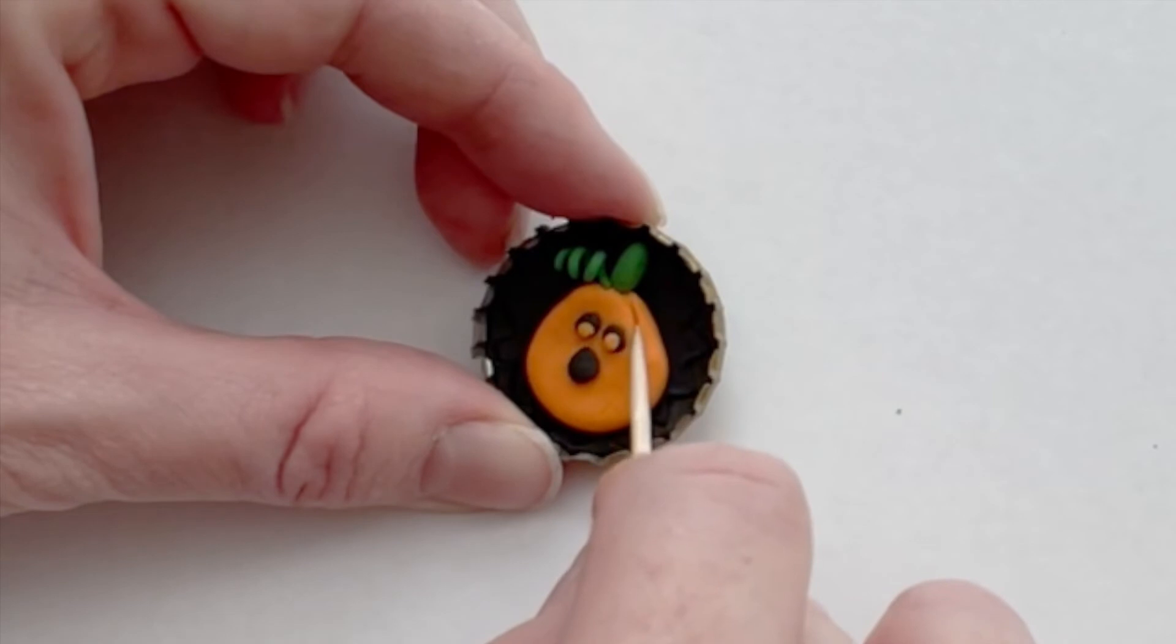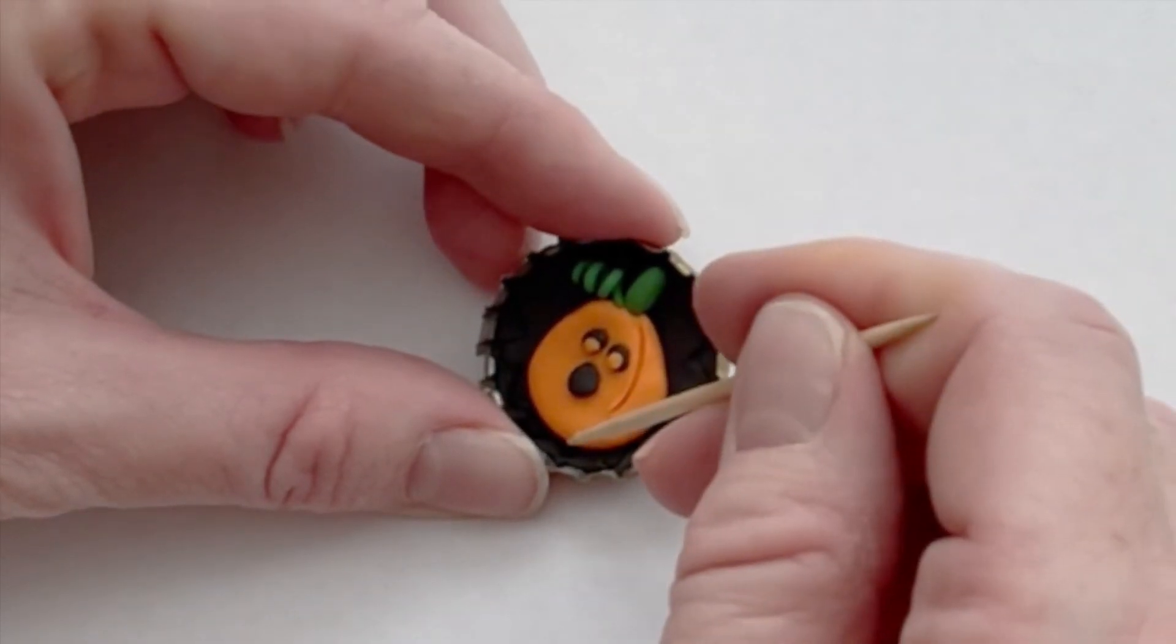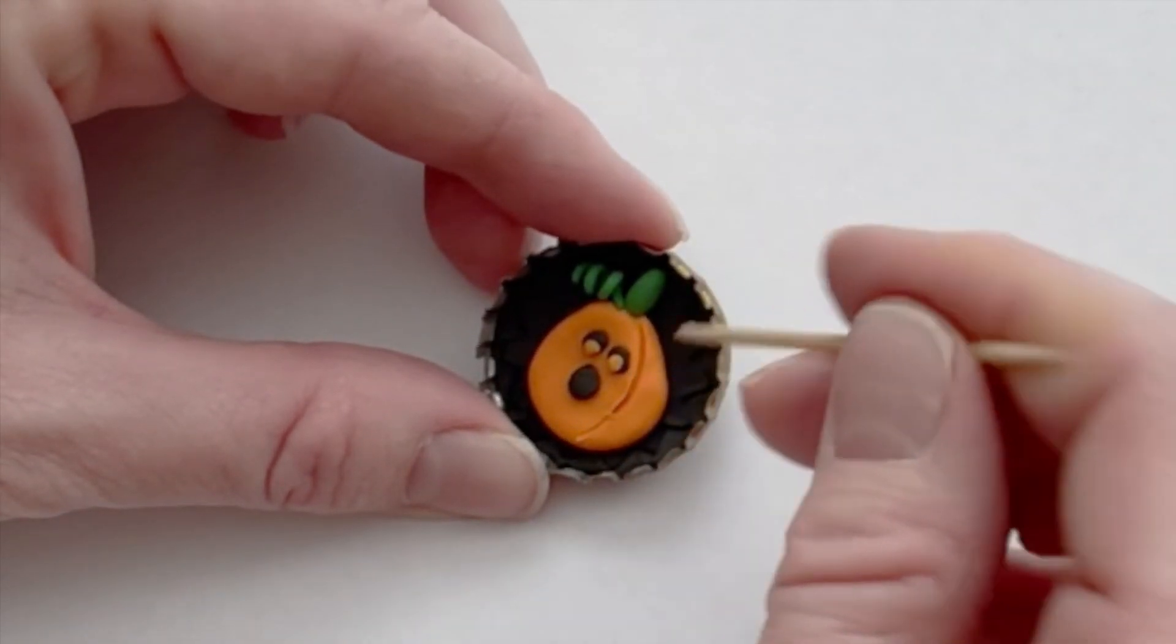Add some detail to the pumpkin by drawing lines from the top to the bottom with the end of your toothpick.